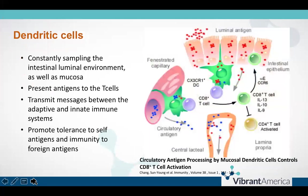Dendritic cells are antigen presenting cells found in the intestinal epithelial layer. Their job is to sample the luminal environment and present antigens to the body's T cells in the lamina propria, after which those T cells activate an immune response. Another important function of dendritic cells is to help our T cells differentiate self from non-self, which is critical in the discussion of barrier integrity and recognizing antigens such as commonly consumed foods and commensal bacteria — both of which we do not want to activate immune attacks on, most of the time.